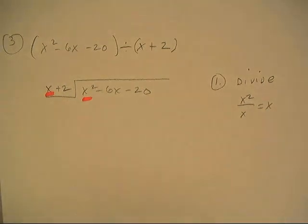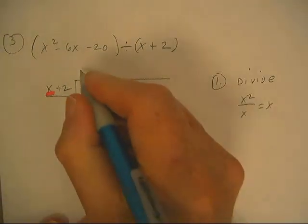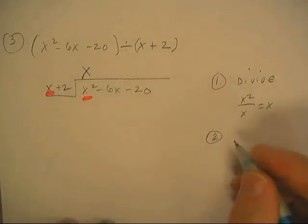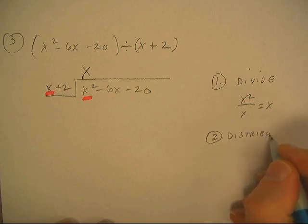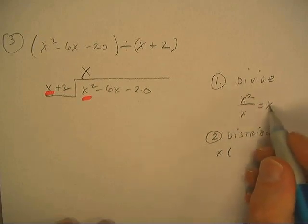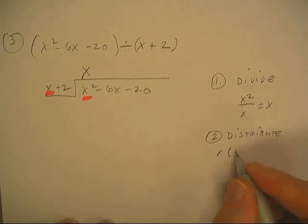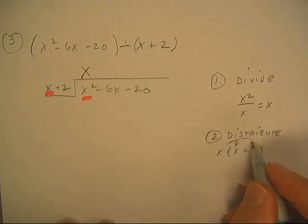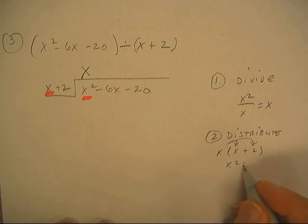The second step is distribute. Distribute would be this new quotient times my divisor, so we're going to distribute this: x squared plus 2x. Don't round it up under here yet.